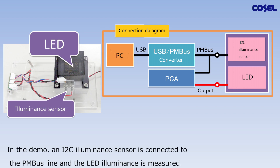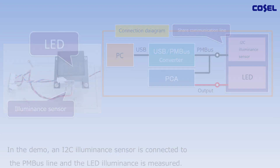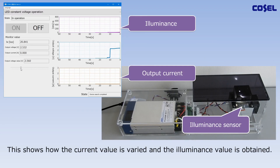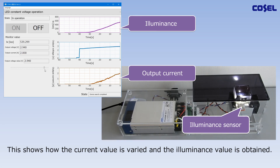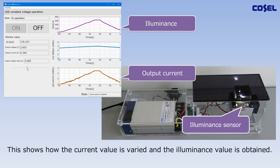In the demo, an I2C illuminance sensor is connected to the PMBus line and the LED illuminance is measured. This shows how the current value is varied and the illuminance value is obtained.